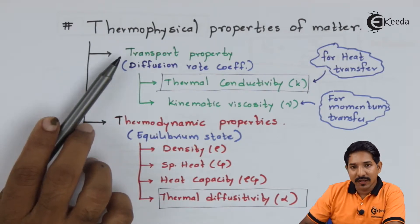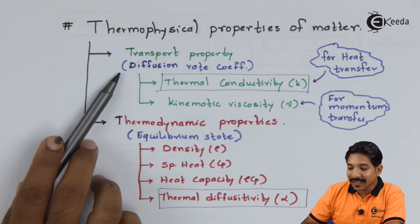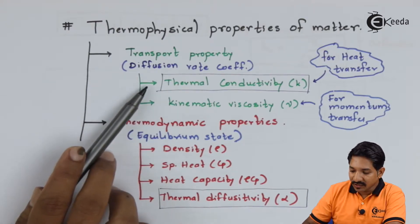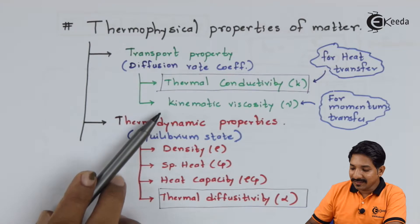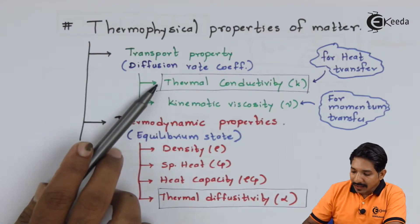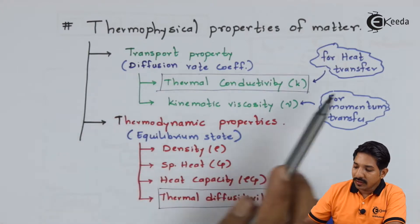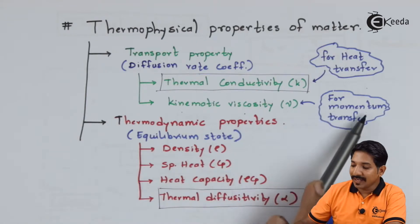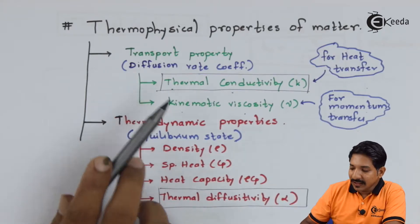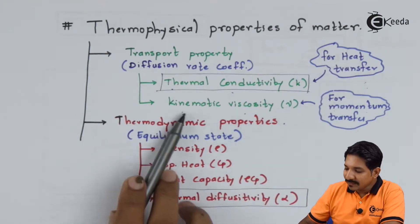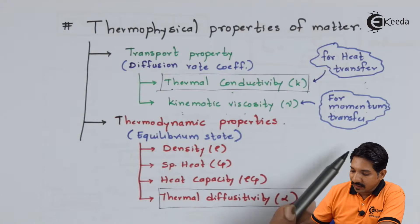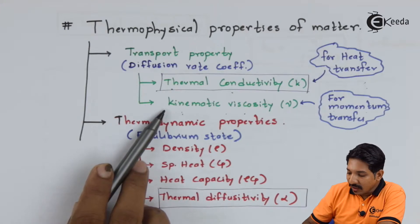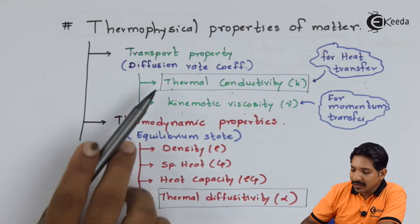Transport properties talk about the diffusion rate coefficient. There are two transport properties: thermal conductivity and kinematic viscosity. Thermal conductivity talks about heat transfer rate, and kinematic viscosity talks about momentum transfer. Since kinematic viscosity is studied in fluid mechanics, we will focus on thermal conductivity here.